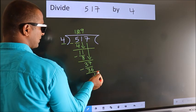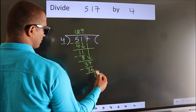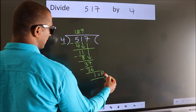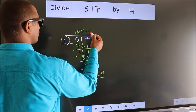No more numbers to bring it down. So, we stop here. This is our remainder. This is our quotient.